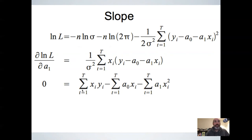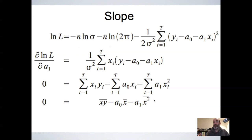Setting that equal to zero and multiplying by sigma squared to eliminate it, we expand the parentheses and get: a sum of x times y, a sum of x times the intercept a0, and a sum of a1*x squared. Dividing both sides by n gives us the mean of xy minus a0 times the mean of x minus a1 times the mean of x squared. Two important things: the mean of xy is not the same as the mean of x times the mean of y, and the mean of x squared is not the same as the mean of x, squared.